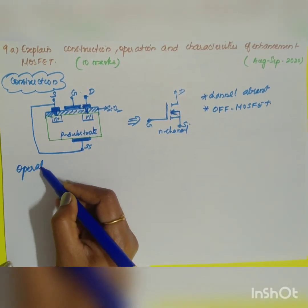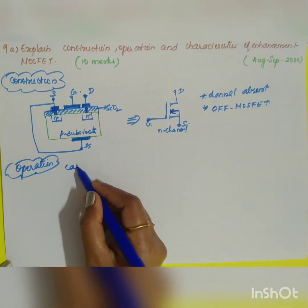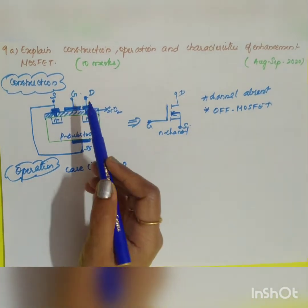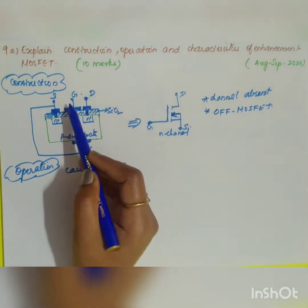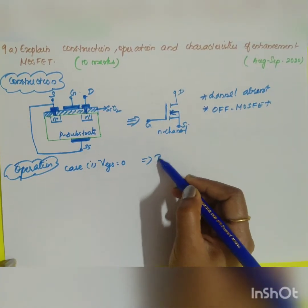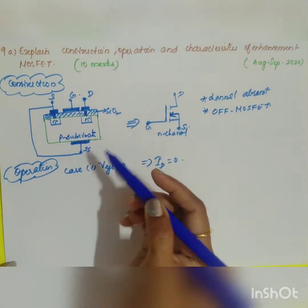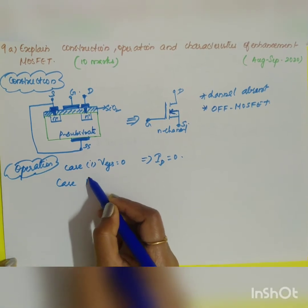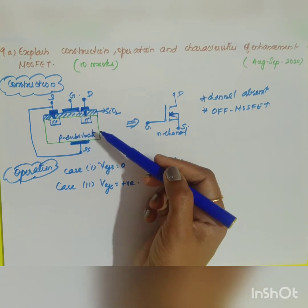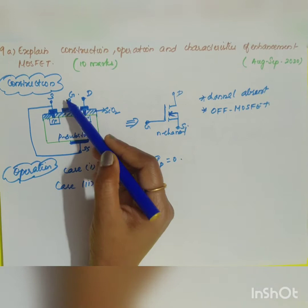Moving on to operation, we consider three cases. Case 1: when VGS is equal to zero, no signal is given, so the drain current ID is equal to zero because there is no channel for current to flow. Case 2: when VGS is equal to positive — since this is an n-channel enhancement MOSFET, the channel will be n-type.